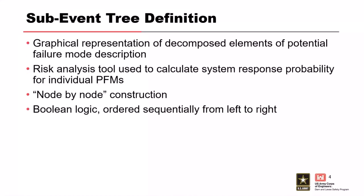Sub-event trees serve two roles in a risk analysis. The first is as a graphical representation of the decomposed elements of a potential failure mode description, to help ensure that all events required for that failure mode to reach failure or breach have been identified. The second role is as risk analysis tools used to calculate the system response probabilities for the individual failure mode. The sub-event tree is constructed on a node-by-node basis, using Boolean logic to work through the progression of nodes sequentially from left to right.